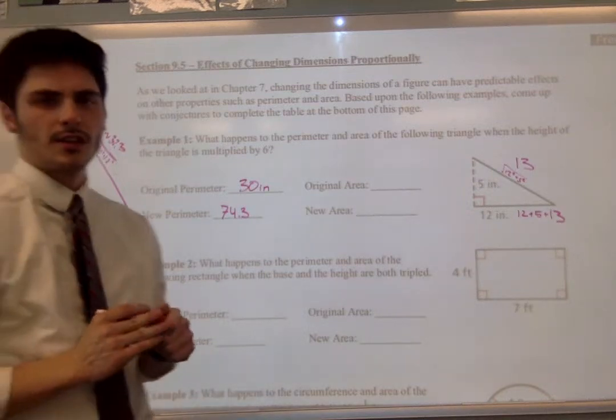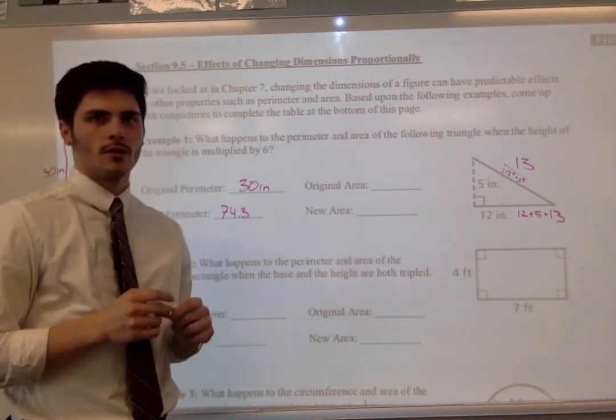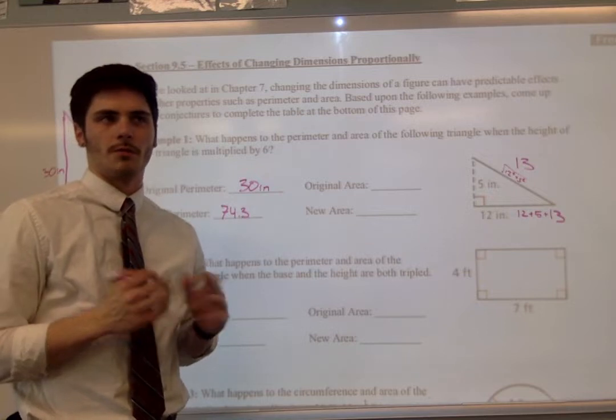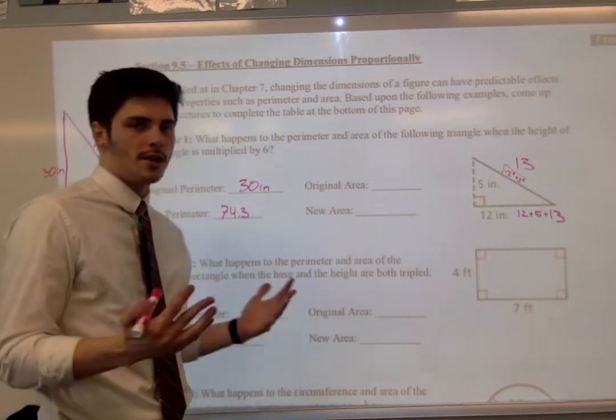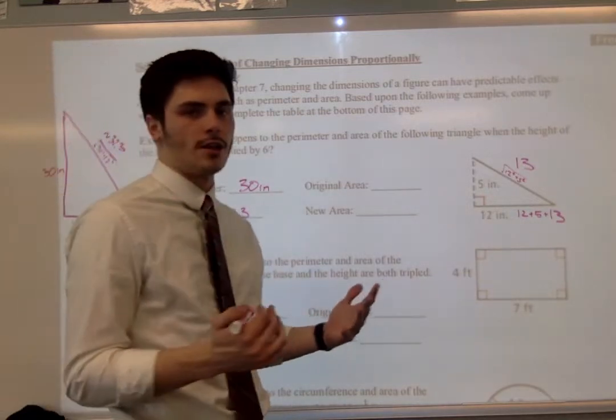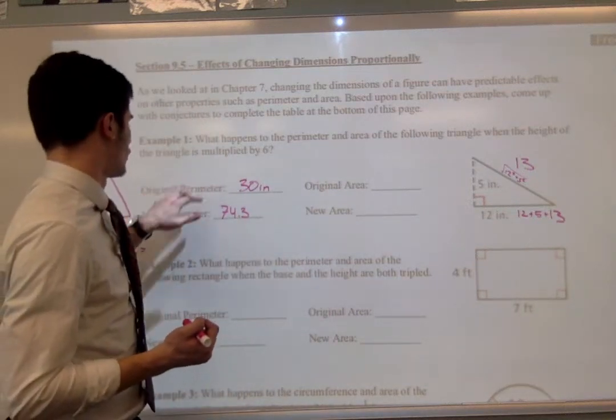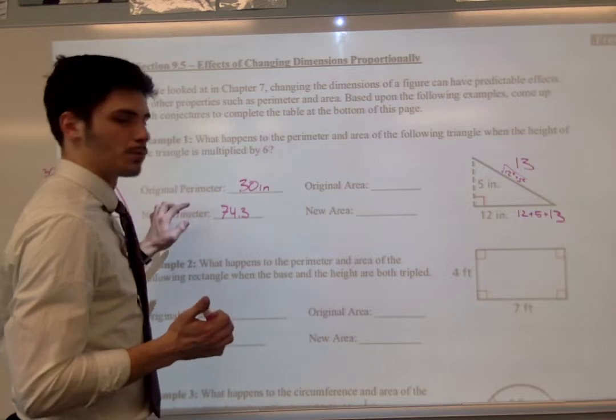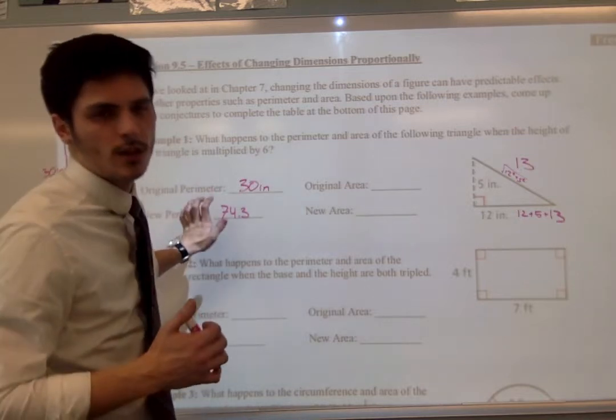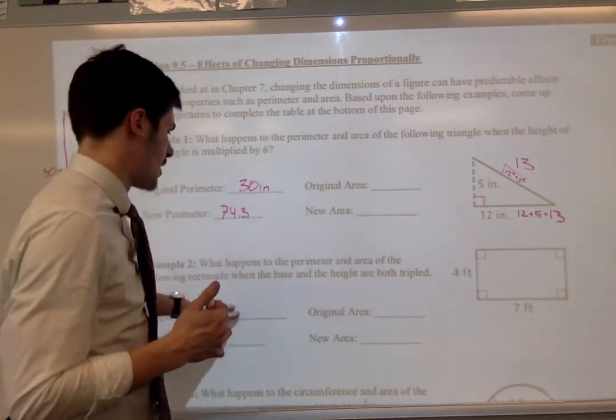So it doesn't look like there was any nice ratio change. There wasn't any proportional change given from when we went to the original to multiplying one of the dimensions by 6. So that one's interesting. We'll keep looking at these patterns as we go on.